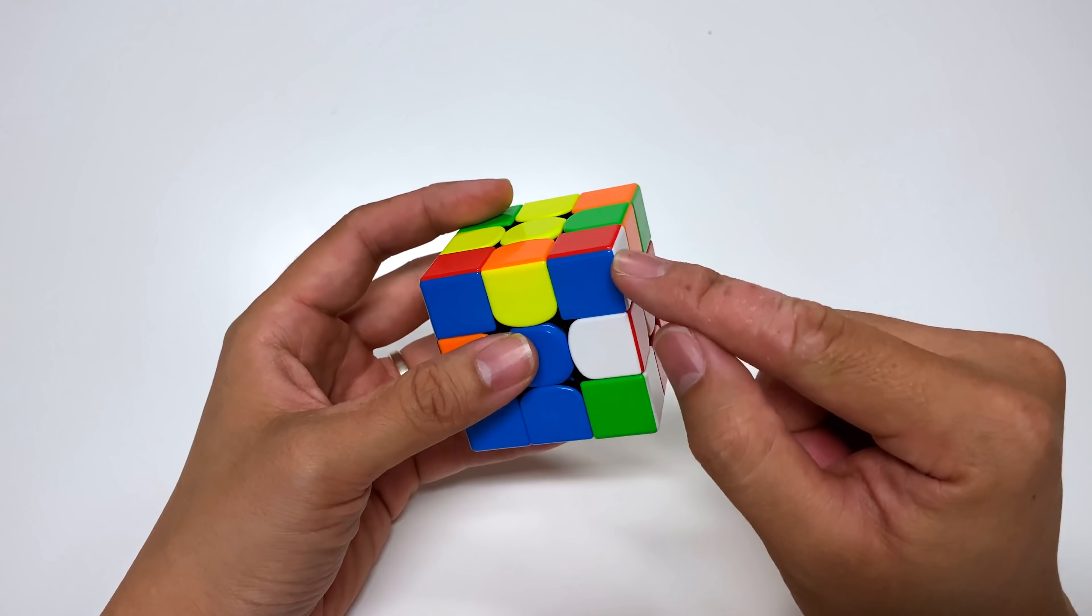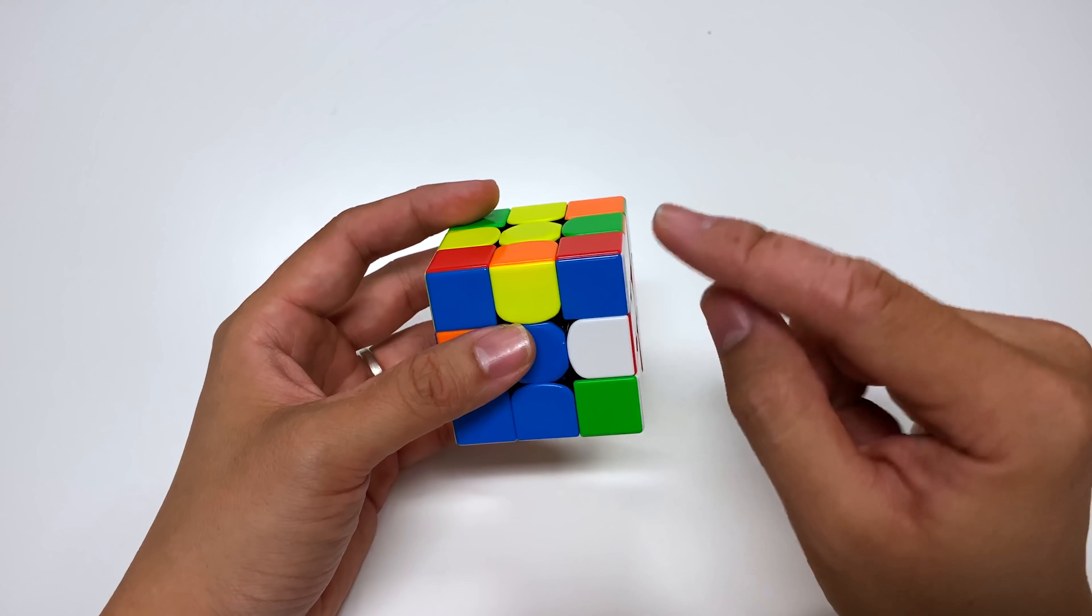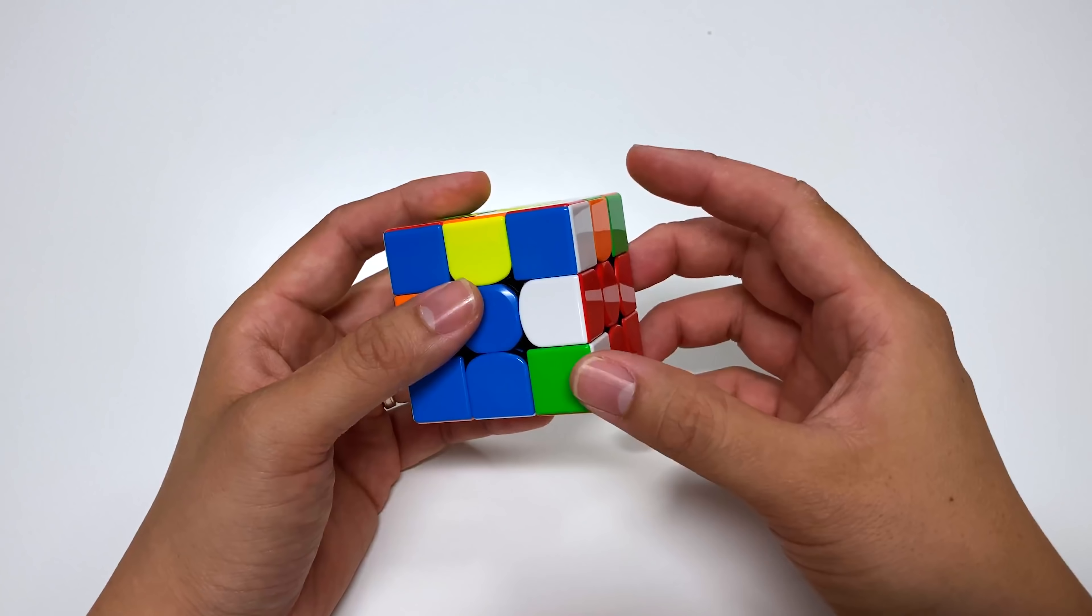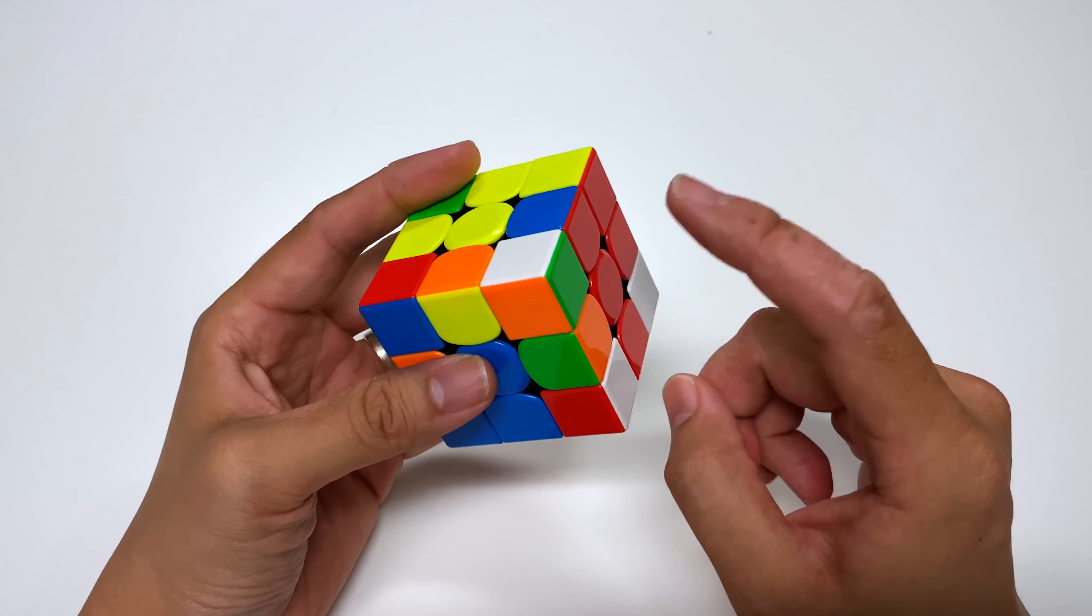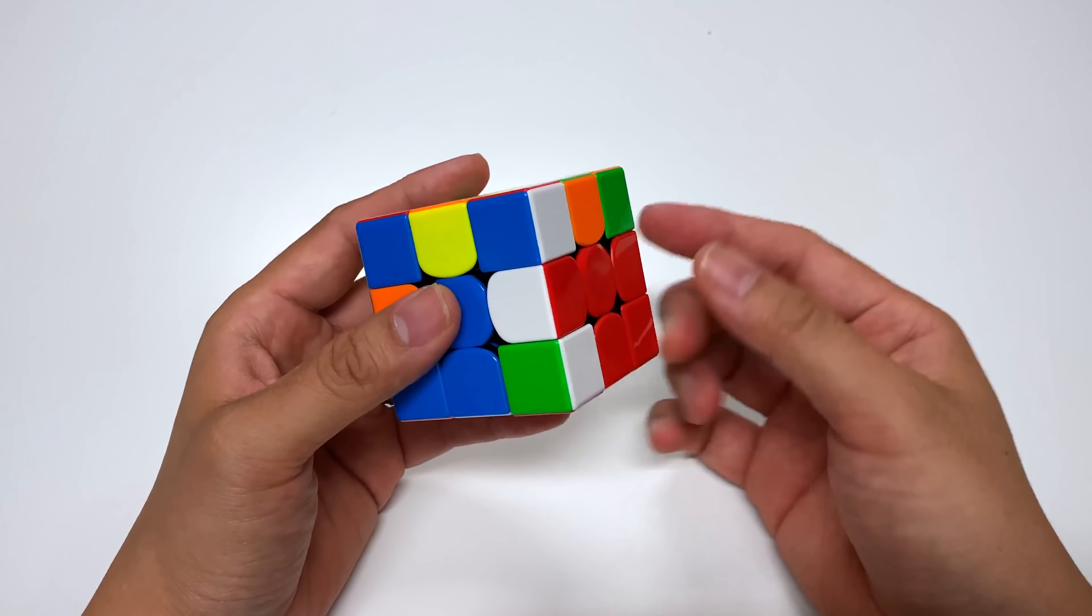I noticed as I was putting red in that the blue red edge was right here. And instantly thought, oh man, it would be so amazing if I find the blue red corner. Because that would be a really easy insert. And as luck would have it, it was right there. It meant that I then had to sort of undo that move, unfortunately, to insert it.